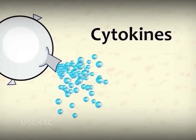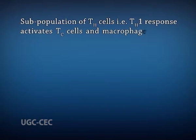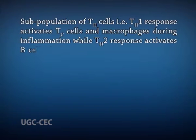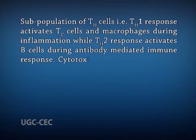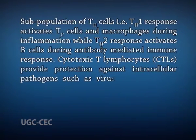T helper cells are crucial for defense against pathogens and elicit different types of immune responses produced by cytokines. For example, the TH1 subpopulation activates cytotoxic T cells and macrophages during inflammation, while TH2 response activates B cells during antibody-mediated immune response. Cytotoxic T lymphocytes, or CTLs, provide protection against intracellular pathogens such as viruses, bacteria, and parasites by secreting cytokines.